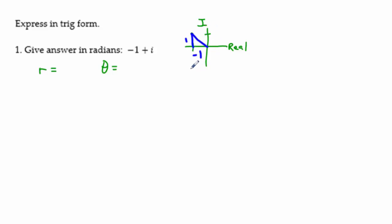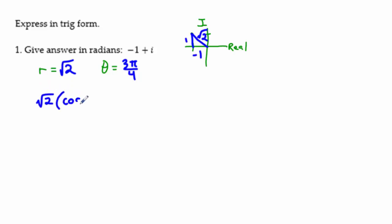Find the hypotenuse using the Pythagorean theorem or by recognizing this as a special right triangle — that makes the hypotenuse square root of 2. The inside angle is 45 degrees, which means to get around to this angle is 3π/4. So r is √2 and θ is 3π/4. Then we plug into trig form: r(cosθ + i sinθ). That's all we have to do, since the answer is in radians.